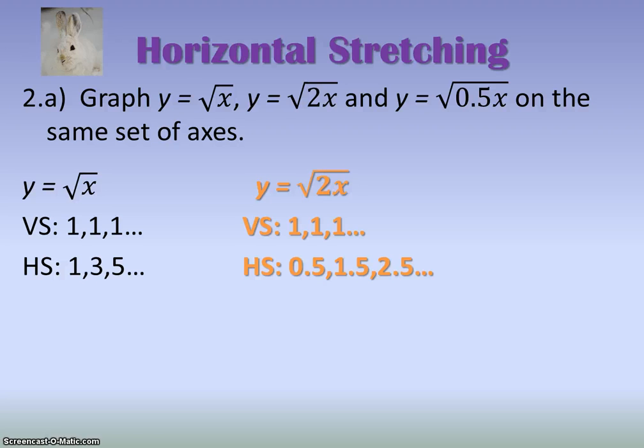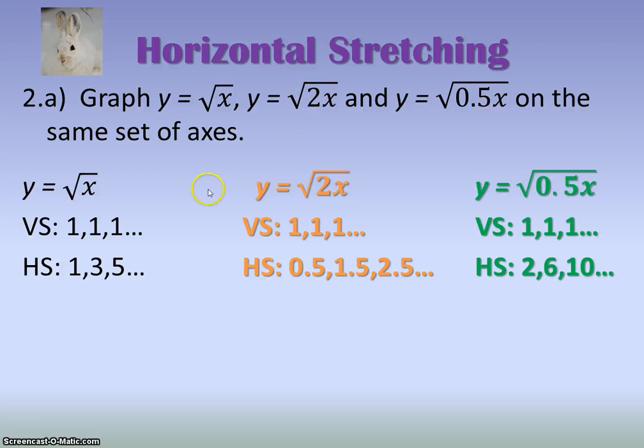So instead of the overs as 1, 3, 5, it's now going to be overs as 1 times a half, 3 times a half, and 5 times a half, so 1 over this number. Then the last one's going to be 1, 3, 5, except we're going to multiply them by 1 over this number. So essentially, they've doubled.